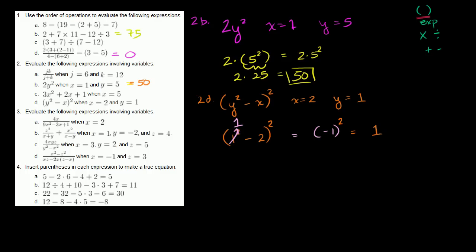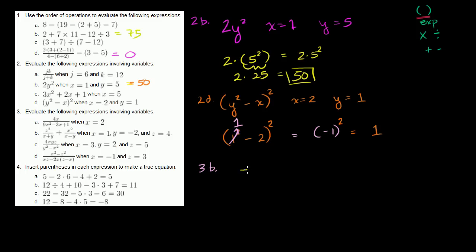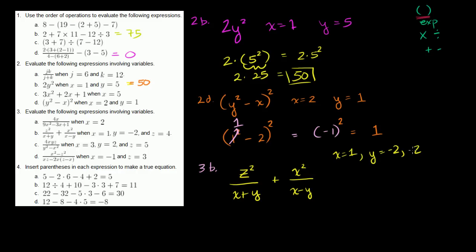Let's do 3b. We have z² over (x plus y) plus x² over (x minus y), where x equals 1, y equals negative 2, and z equals 4.